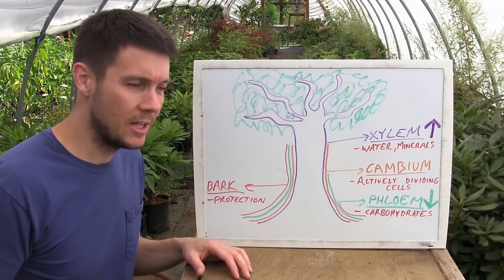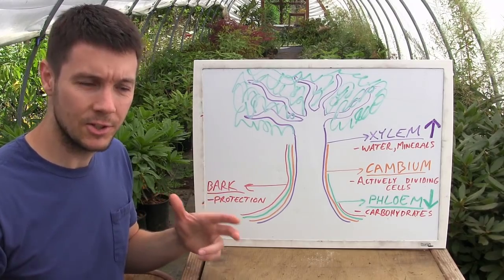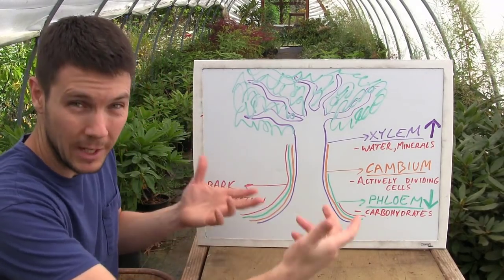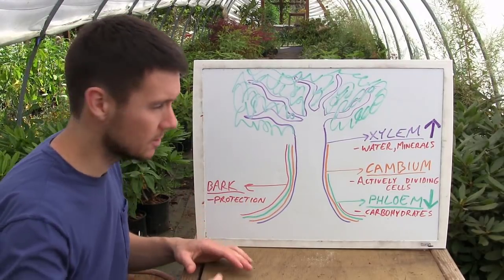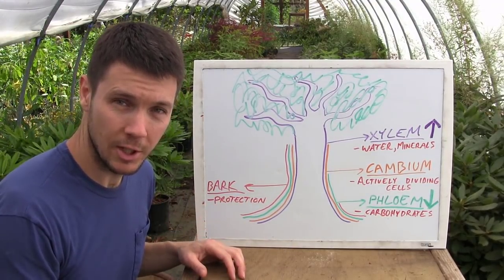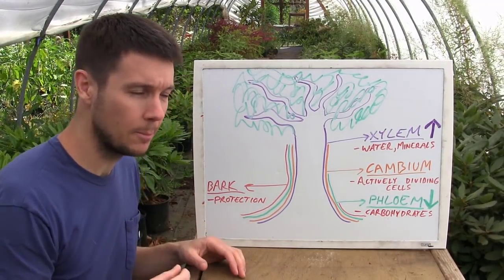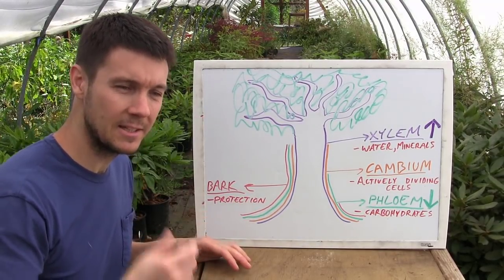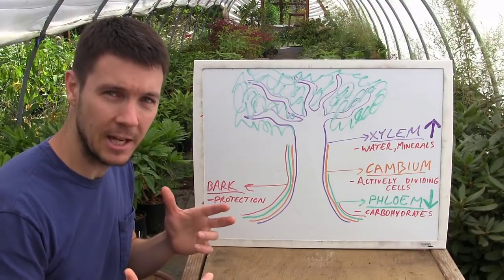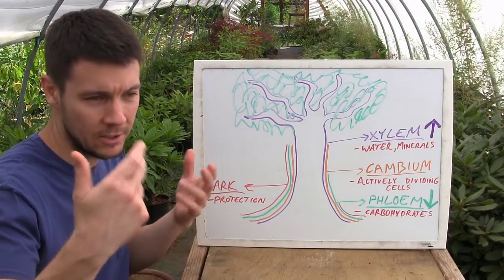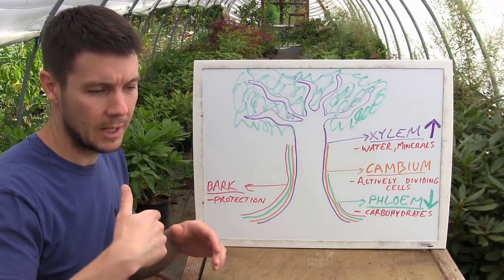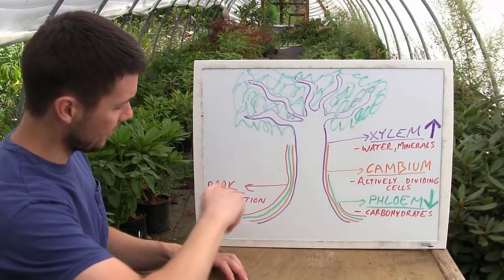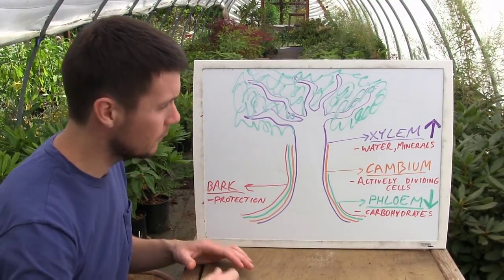All right, class is in session. So that you guys understand exactly what I'm trying to do here, we're going to cover some basics of how plants work — or at least most plants. Just under the bark of a tree there are different layers, which you guys are probably aware of. The biggest one we talk about is the cambium, because that's the layer where all the actively dividing cells are.